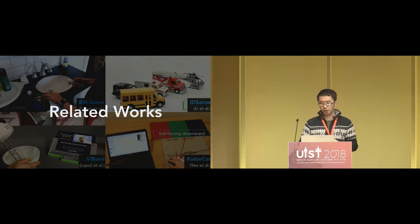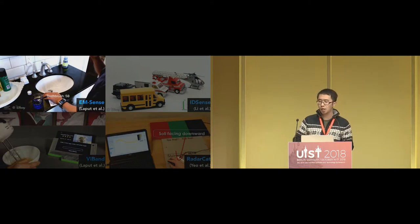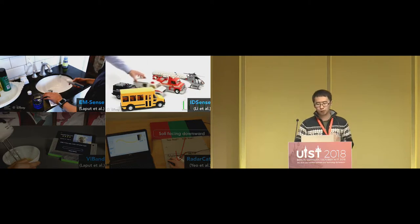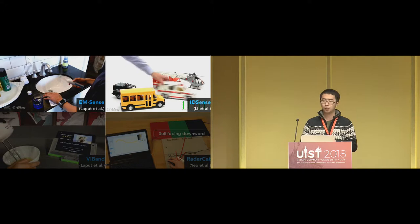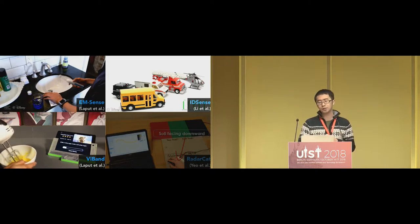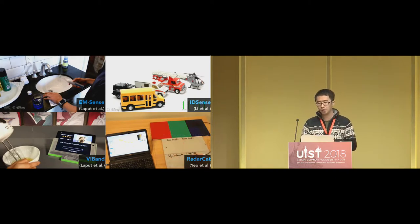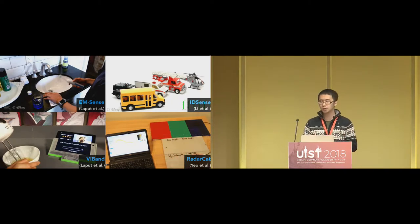I'm going to show you several examples of related work. EMSense recognizes electrical objects via electromagnetic signals, enabling robust untouched object recognition. IDSense instruments objects with passive RFID tags to classify object motion events. YBAN recognizes objects that can generate mechanical vibrations by boosting the sampling rate of an existing accelerometer inside a smartwatch. RadarCAD uses multi-channel radar signals to recognize electrical or non-electrical objects. Our approach is different in that it can not only recognize conductive objects, but is also capable of sensing the object's lateral movements precisely.